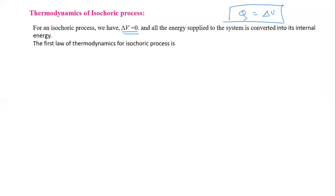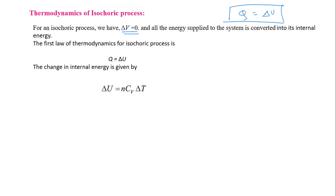The first law of thermodynamics for an isochoric process is Q equals ΔU — heat supplied is used to increase the internal energy. The change in internal energy is given by n·Cv·ΔT, where Cv is the specific heat at constant volume. Work done is given by P·ΔV.